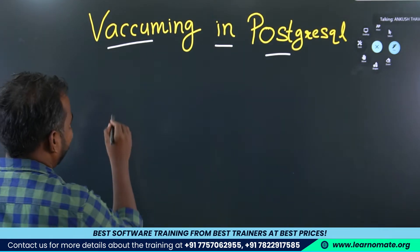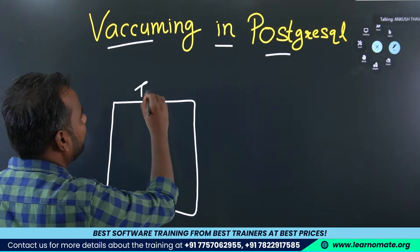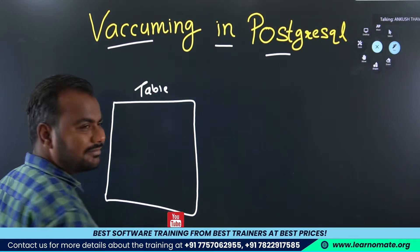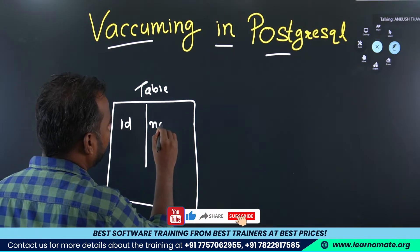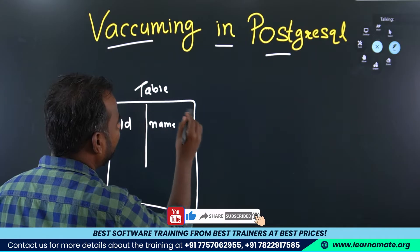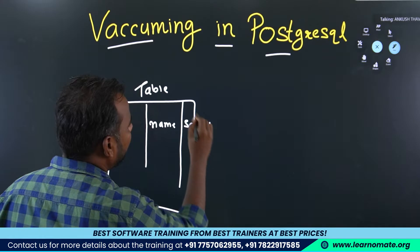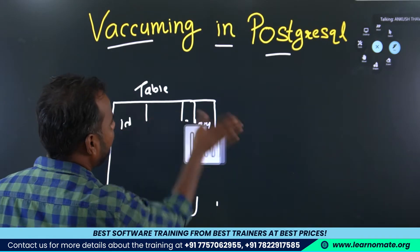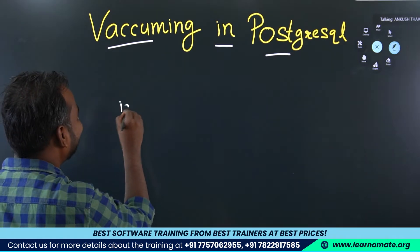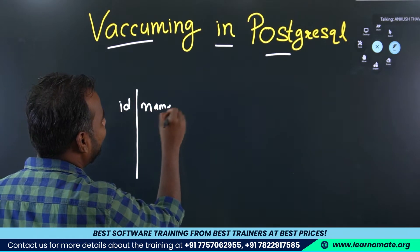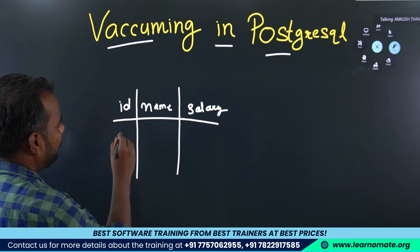To help you understand vacuuming, let me take one example. Let's say you have one table with columns: id, name, and salary. So the table looks like this — we have id, then name, and then salary.